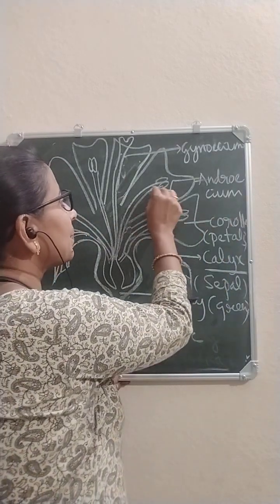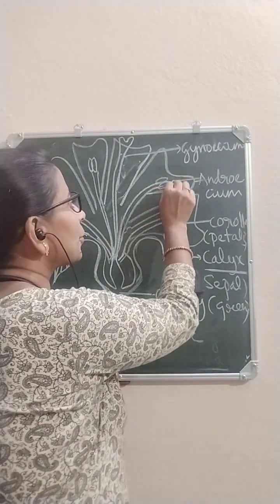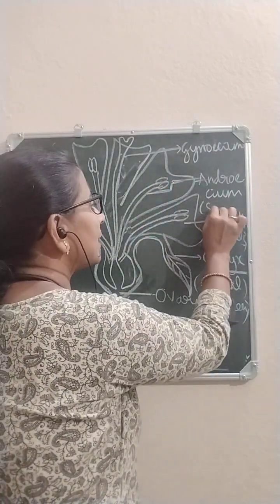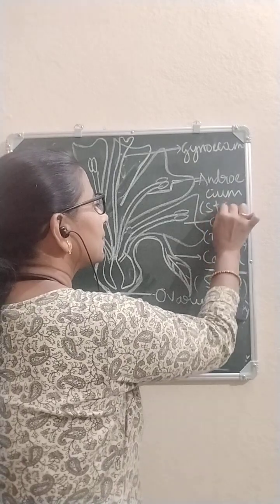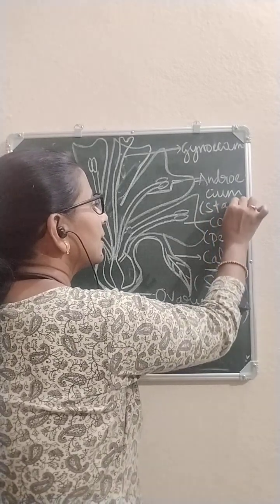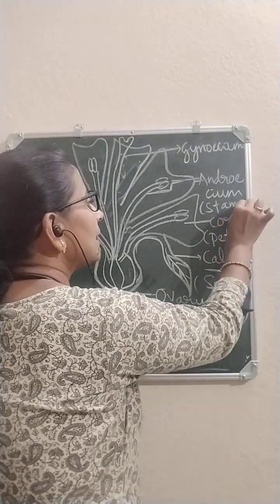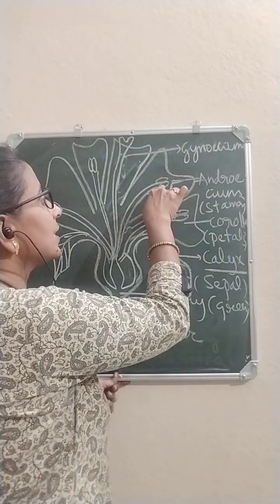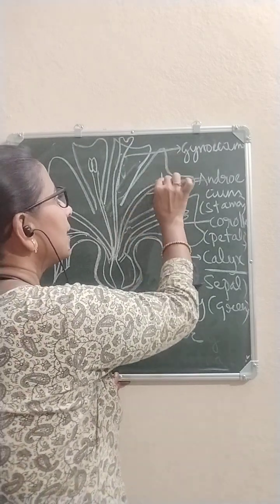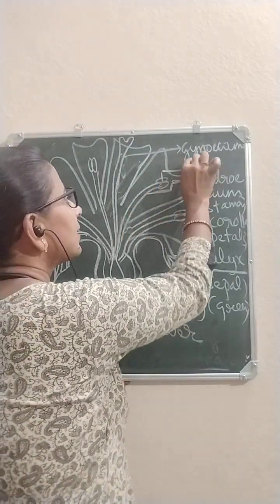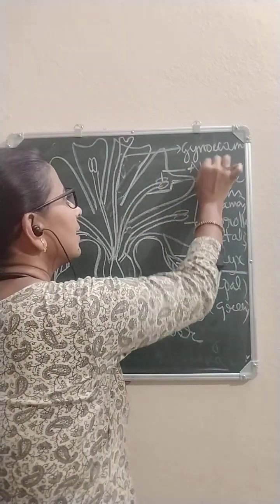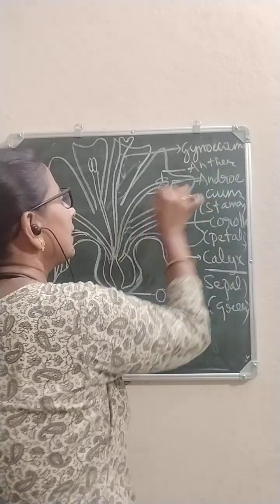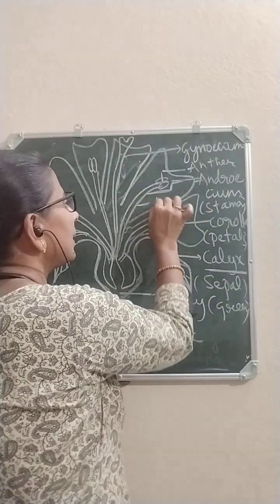Each member of the androecium is called a stamen. This stamen has two parts: one is the anther and the filament. This is the anther, and this is the filament.